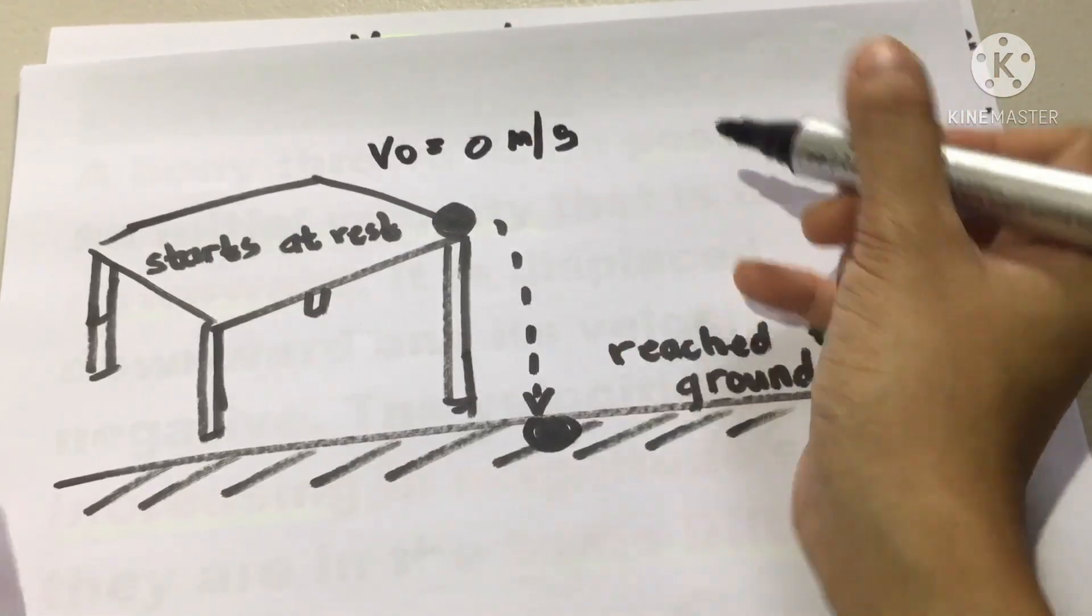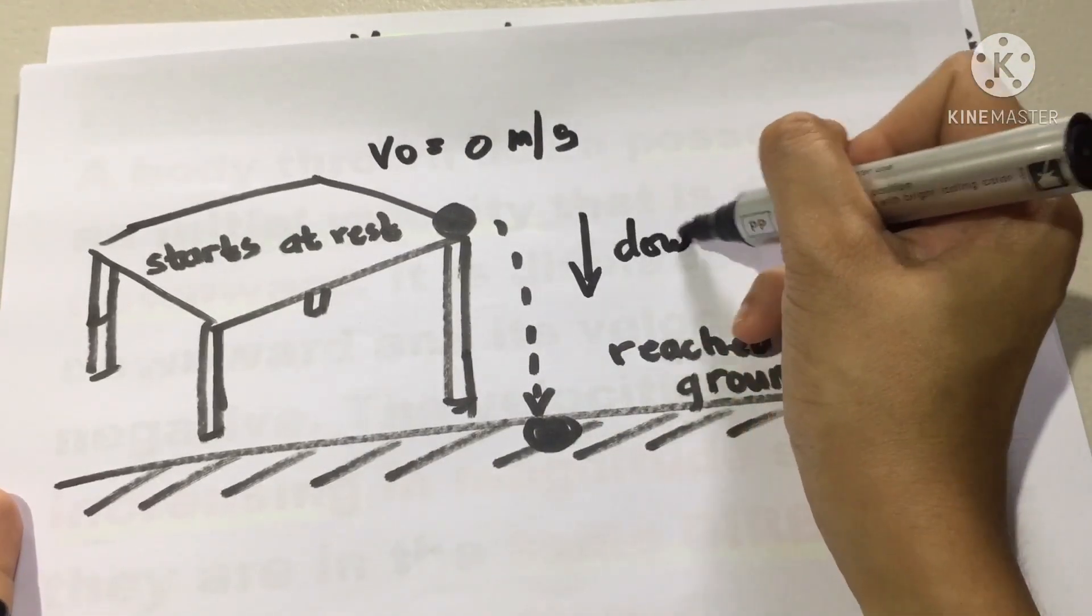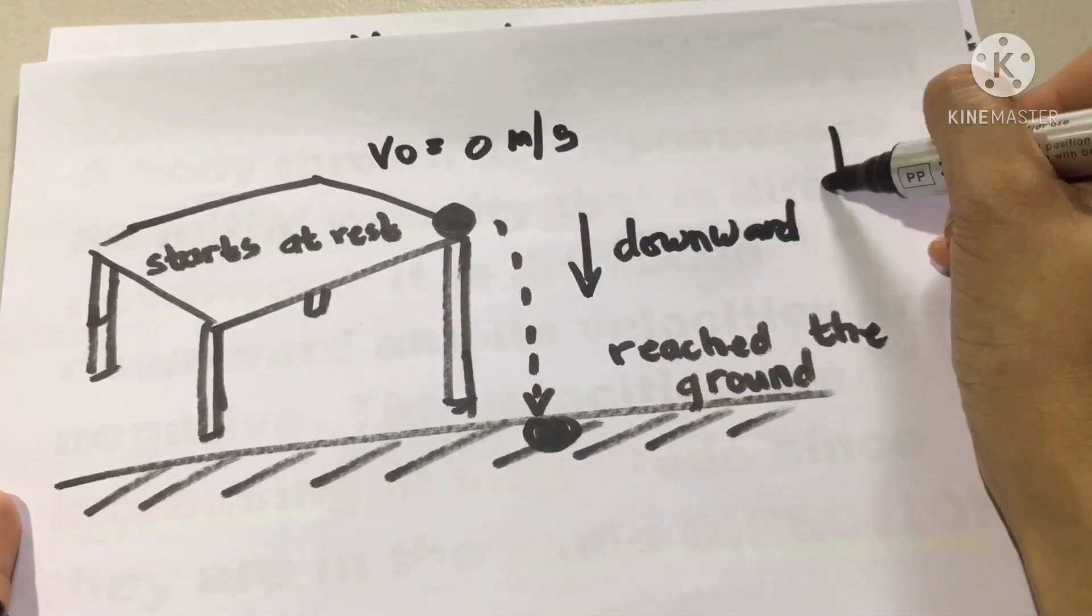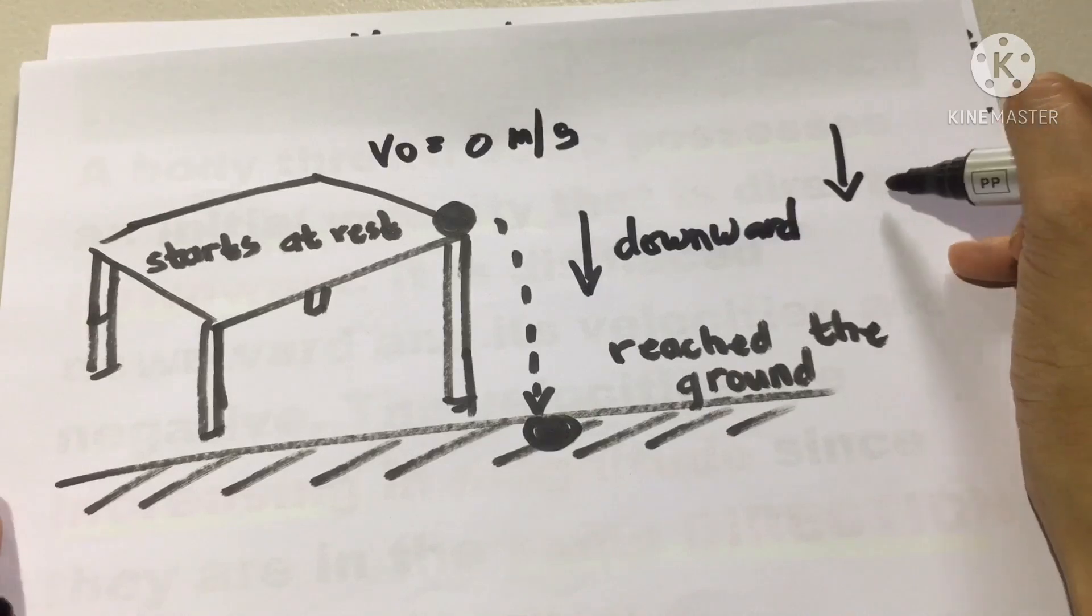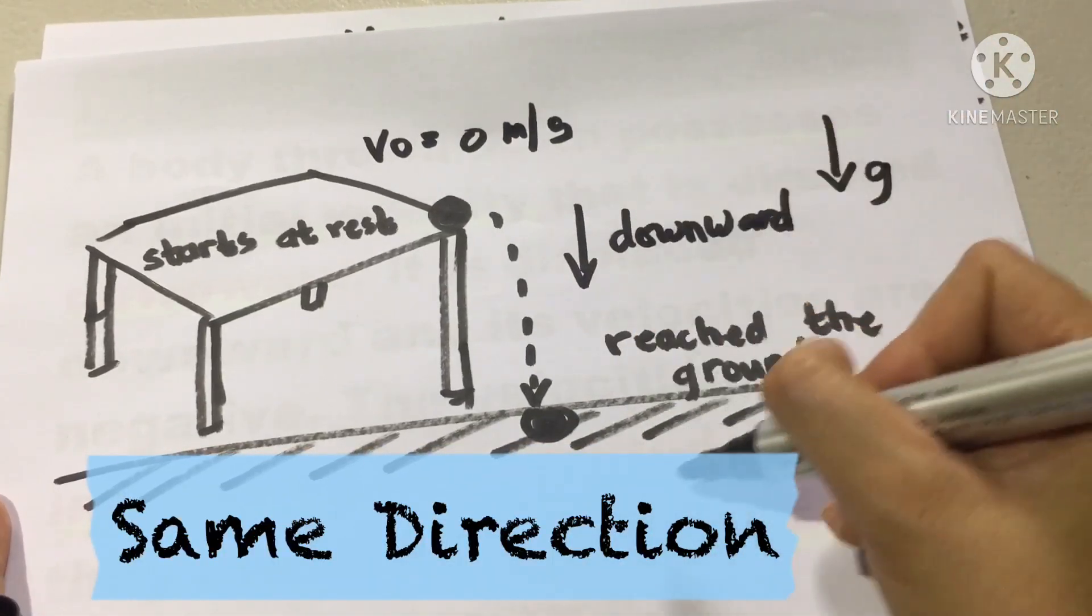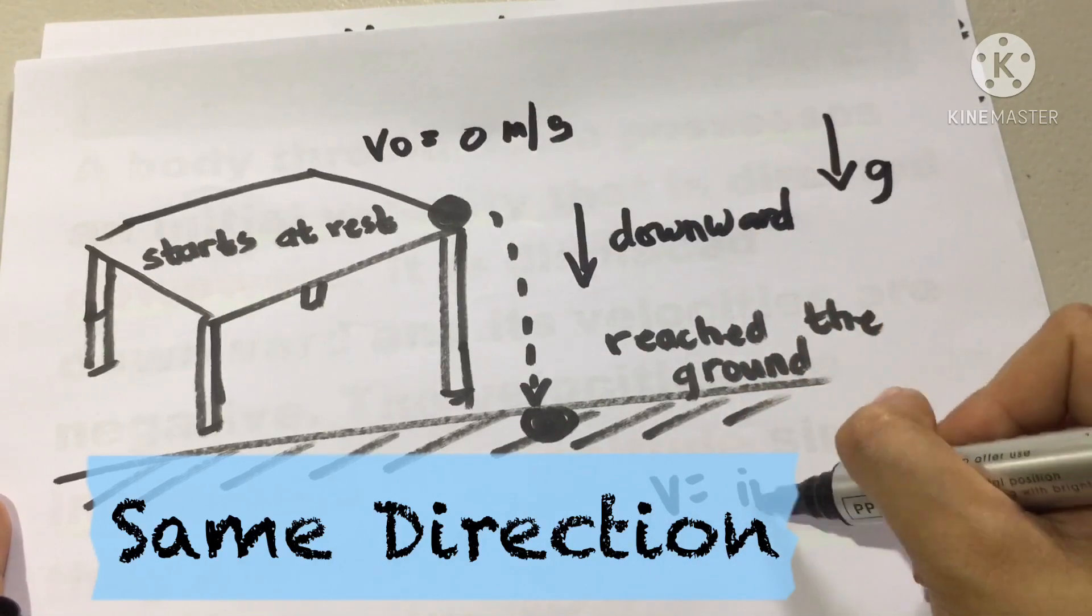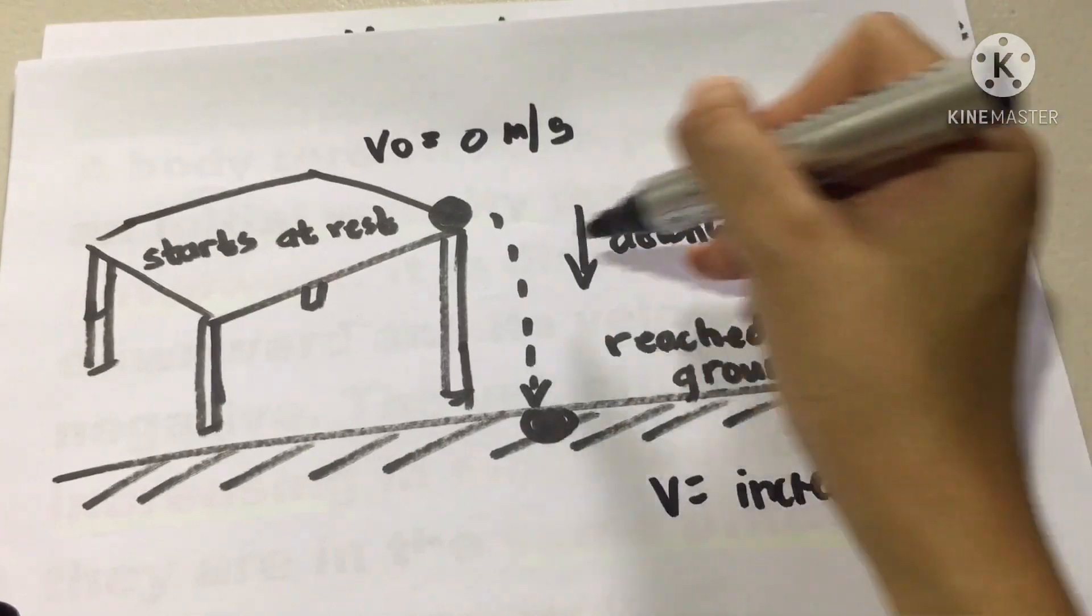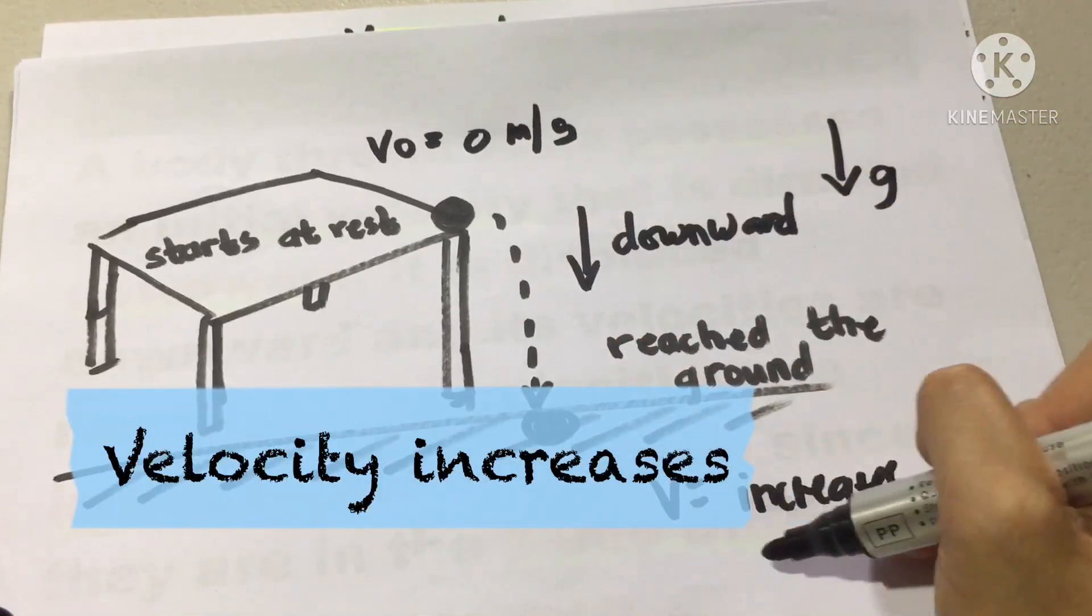And remember, since then, it is a downward direction. Our acceleration is due to gravity and that means they are in the same direction. So their velocity increases. Downward and gravity, same direction. So we will expect it increases.